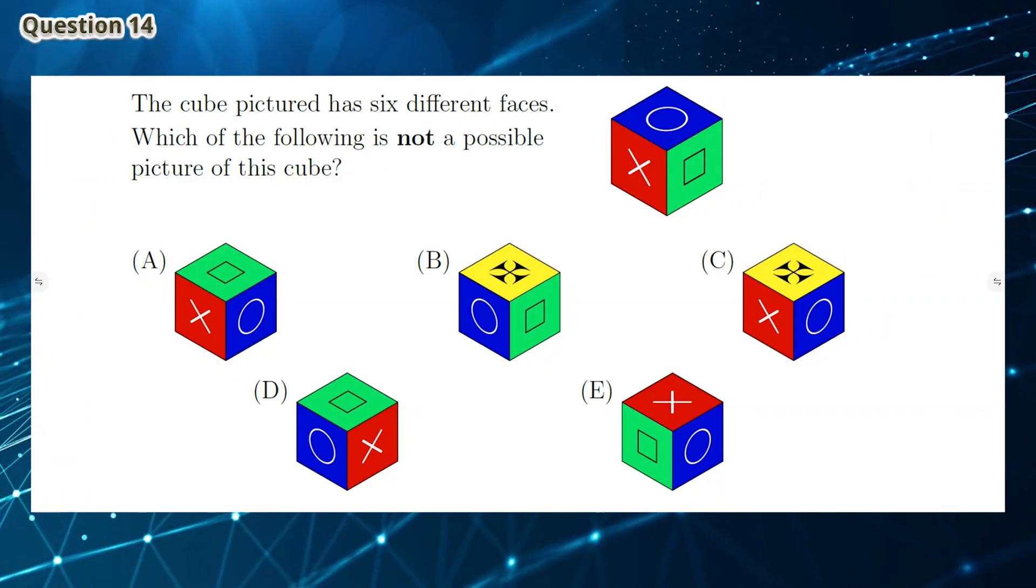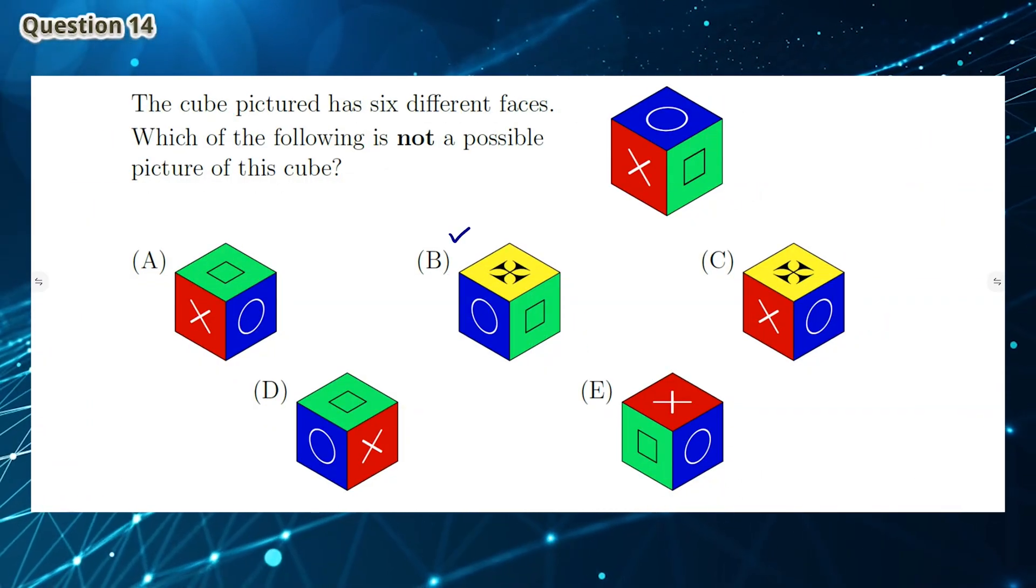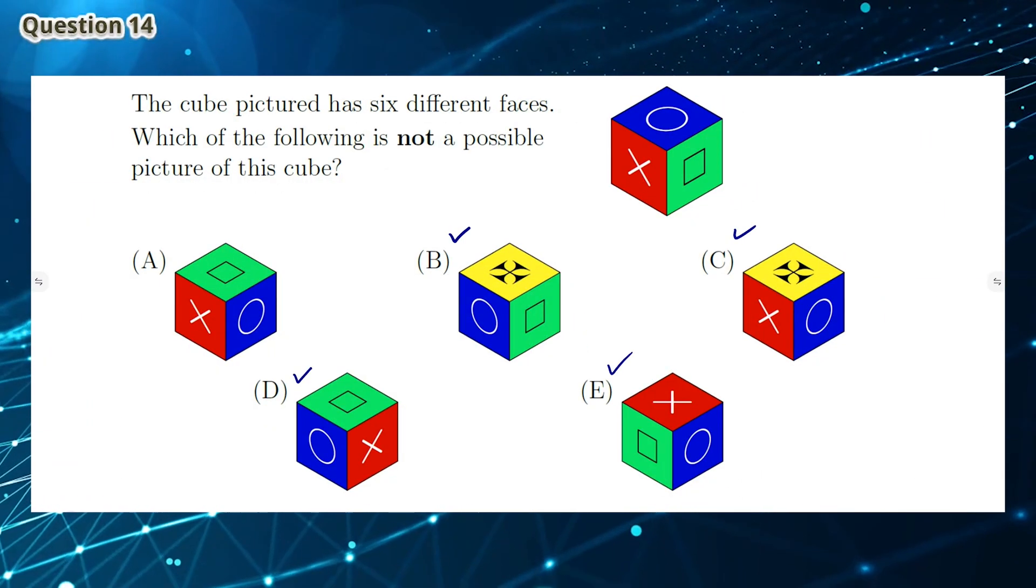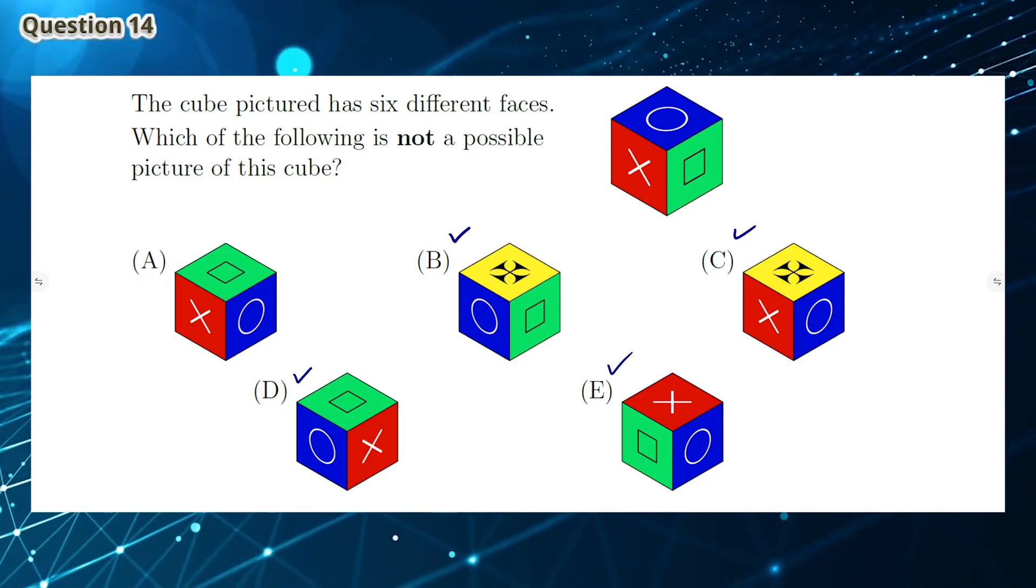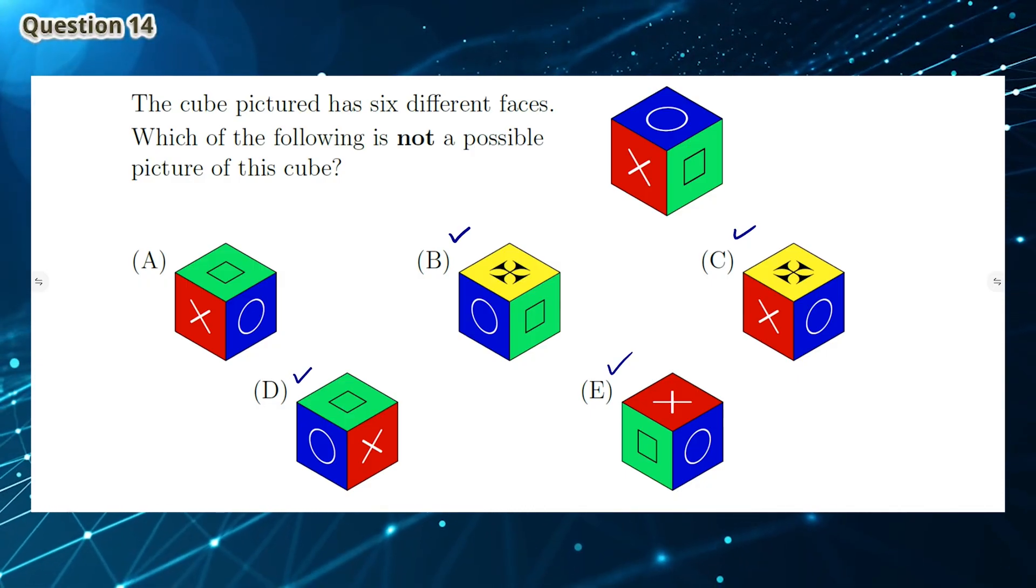Question 14: If we use visualization, we see that options B, C, D, and E are all possible. The only not possible option is A. So the answer is A.